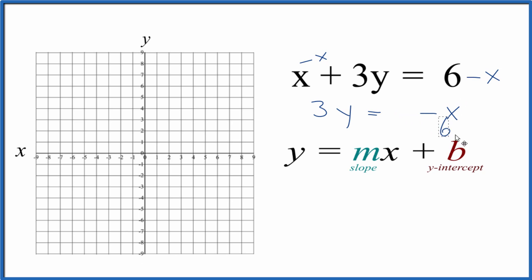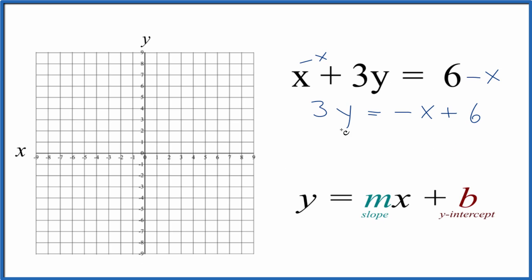And then let's move the 6 to the end here, because that way it'll look more like slope-intercept form. We still do need to get y by itself, though. Let's divide both sides by 3.